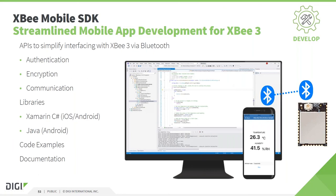For app development, we provide a software development kit called the XBee Mobile SDK, which allows developers to create mobile applications communicating with the XBee over Bluetooth. For example, an end-user application that visualizes sensor data on a mobile device from a sensor connected to the XBee. This SDK provides authentication, encryption, and communication APIs, and is available for multiple platforms such as Xamarin for iOS and Android. Code examples and documentation are included as well.